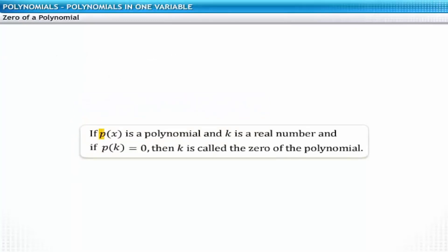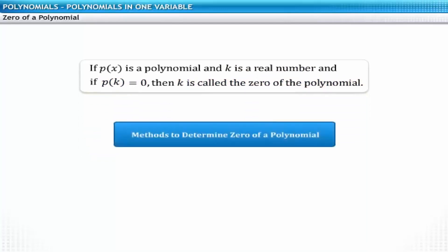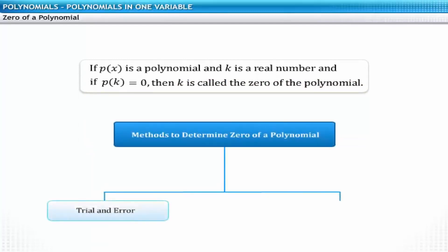In general terms, if p of x is a polynomial and k is a real number, and if p of k is equal to 0, then k is called the zero of the polynomial. You can determine the zero of a polynomial through two methods: by trial and error, and by equating the polynomial to 0.